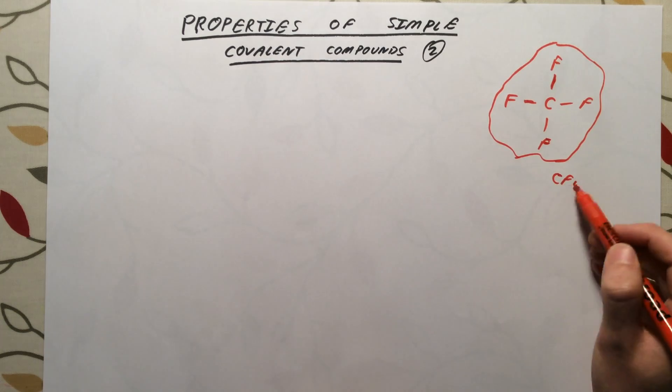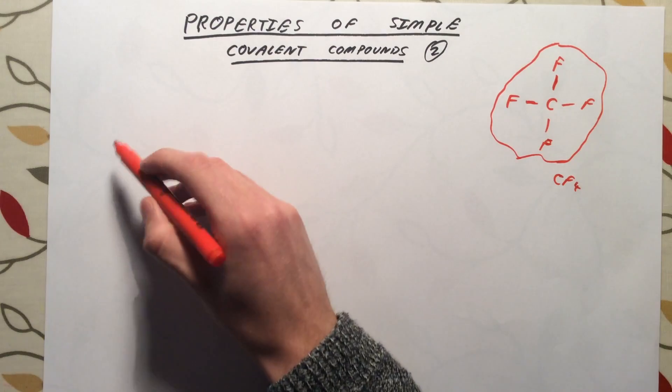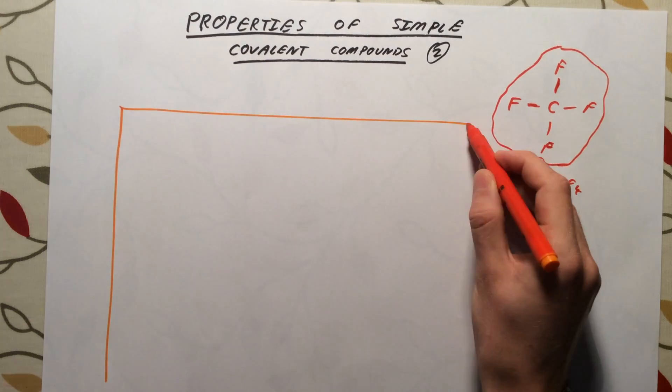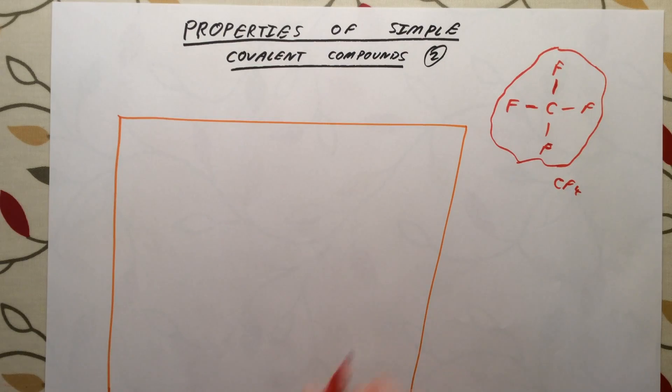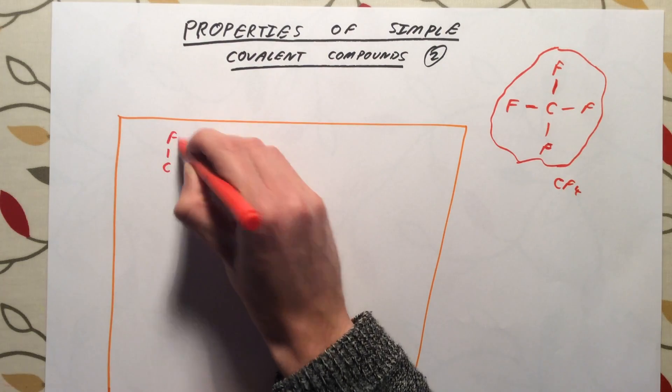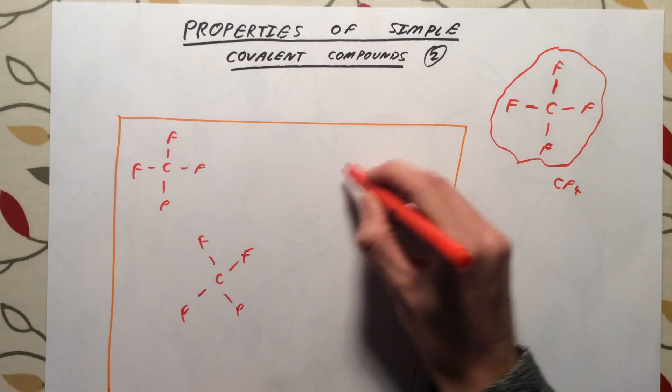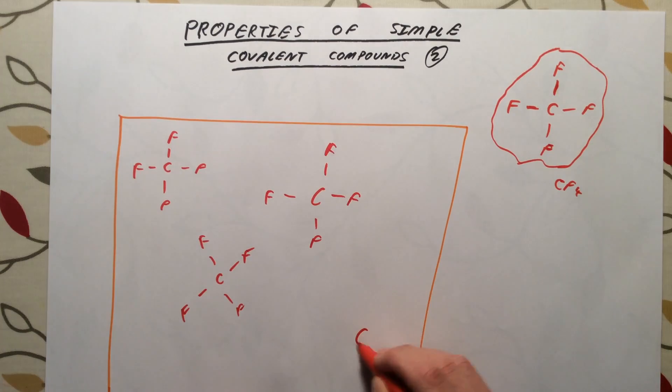You've got carbon and four fluorines that are attached together, but they are free to move wherever they want. So if I had a room that was filled with CF4 molecules, I would have lots of molecules of CF4 all over the place in this room.